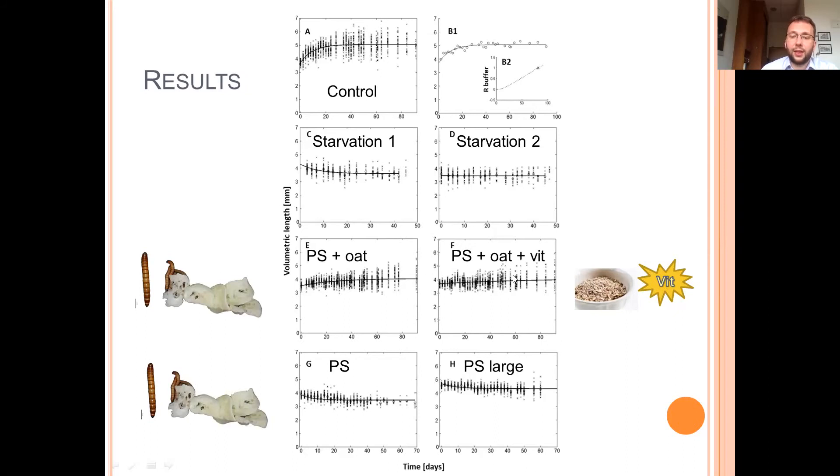It decreased in starvation groups and in groups fed with PS only, over here. And the pupation was observed in the control group. And only a few pupas were found in the groups fed with PS and oats and minerals and vitamins.